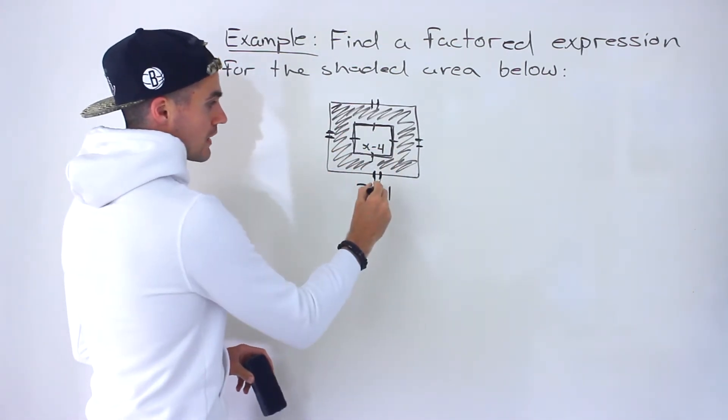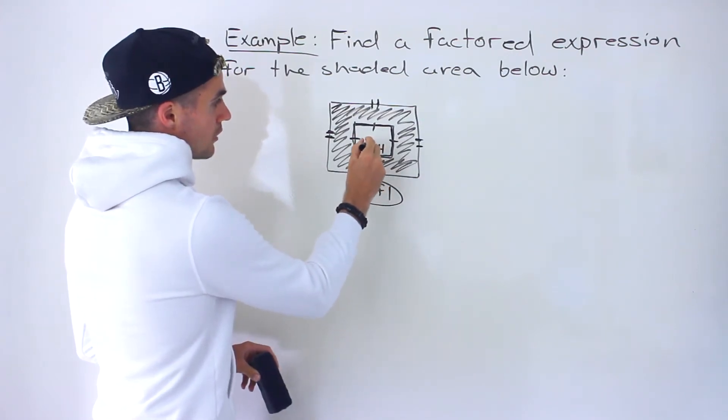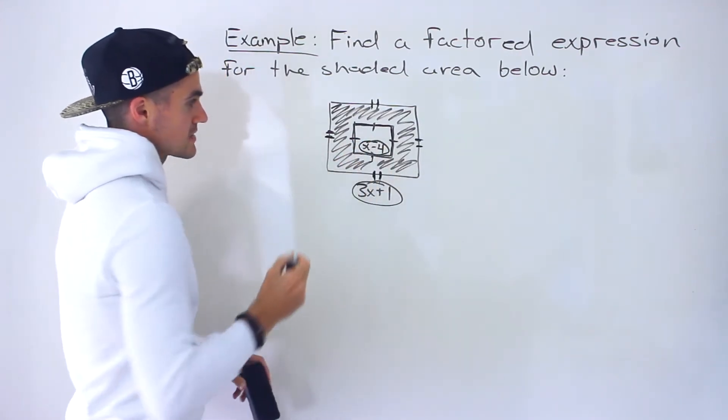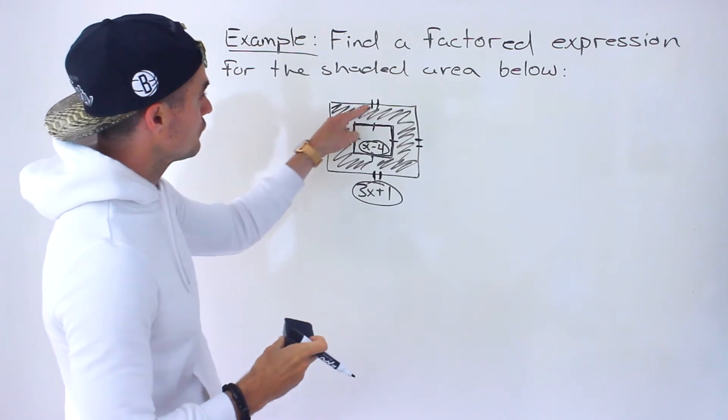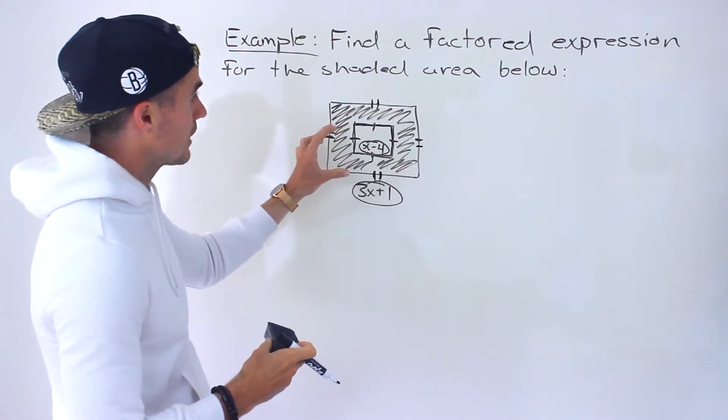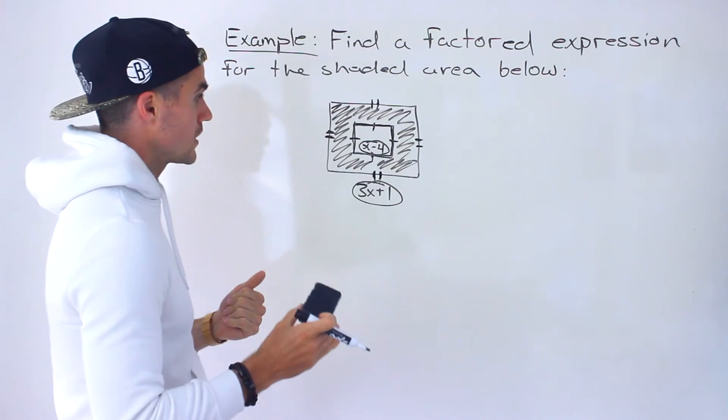The larger square has a length of 3x plus 1, while the smaller square here has a length of x minus 4. We have to find the shaded area in between the squares.